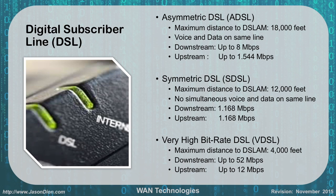ADSL connections were actually faster than T1s and a lot cheaper. Symmetric DSL provided the same speed for upload and download, but because we gave equal speeds in both directions, the overall speed was slower since we didn't have the fast download and slower upload split. With symmetric DSL, you couldn't do simultaneous voice and data, and it was seen as a replacement for ISDN and T1 lines for most businesses. Maximum distance from the provider was 12,000 feet.